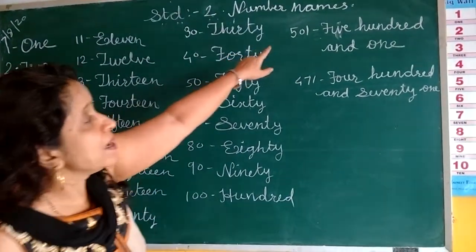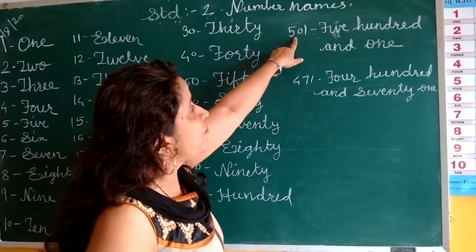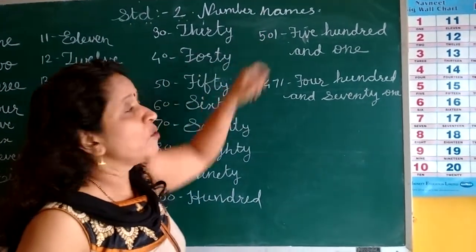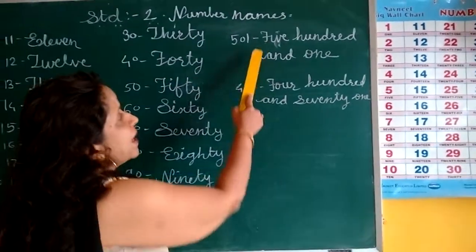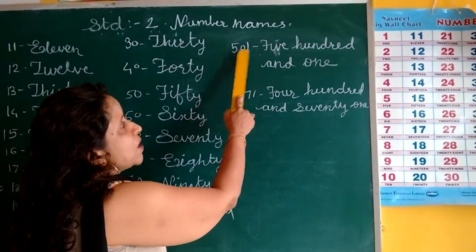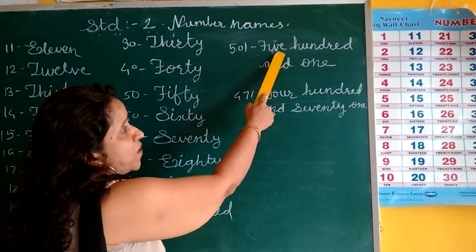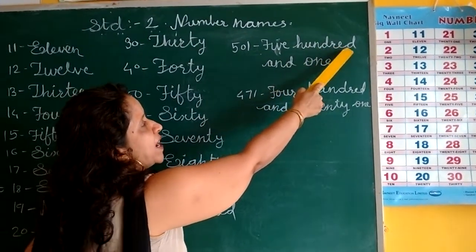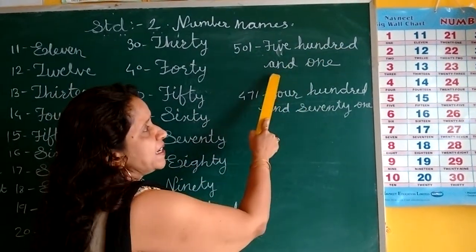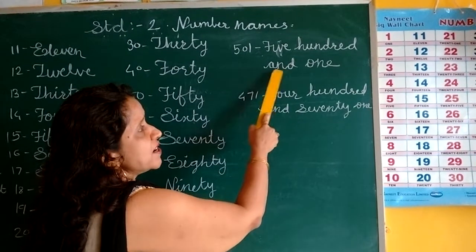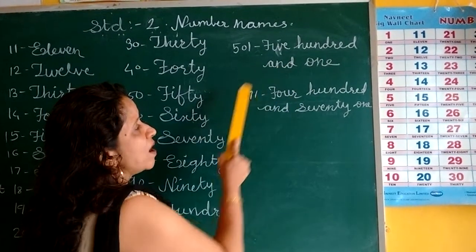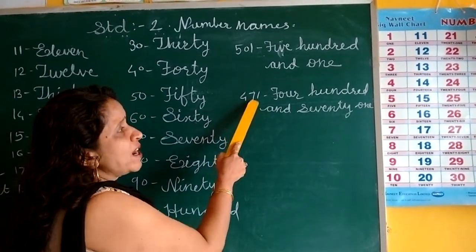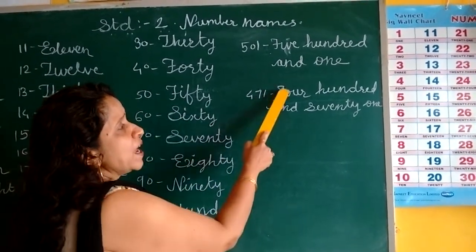Now see, we are going to write 501. How will you write it? F-I-V-E, 5. H-U-N-D-R-E-D, 100. So 501 is five hundred and one.